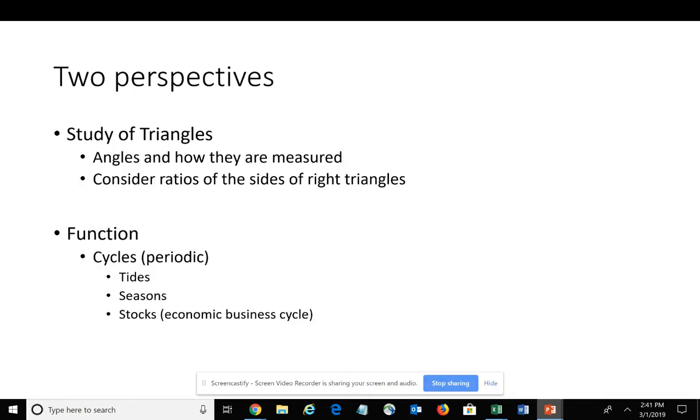So there are two primary perspectives of trigonometry, and we're going to focus on both throughout the course. We start out initially looking at it from the perspective of triangles, focusing on how angles are created and measured, and we look at the ratios of the sides of right triangles, which was the first primary use developed by the Greeks.